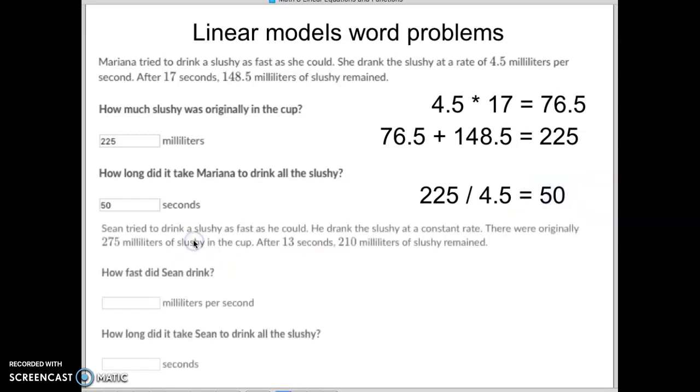Let's do one more. Sean tried to drink his slushie as fast as he could. He drank the slushie at a constant rate. There was originally 275 milliliters in the cup and after 13 seconds there was only 210 remaining. They're not telling us how fast he drank it. We have to figure that out. How fast did he drink this?